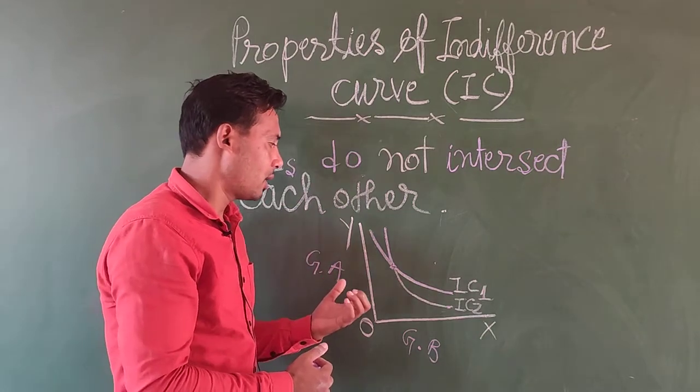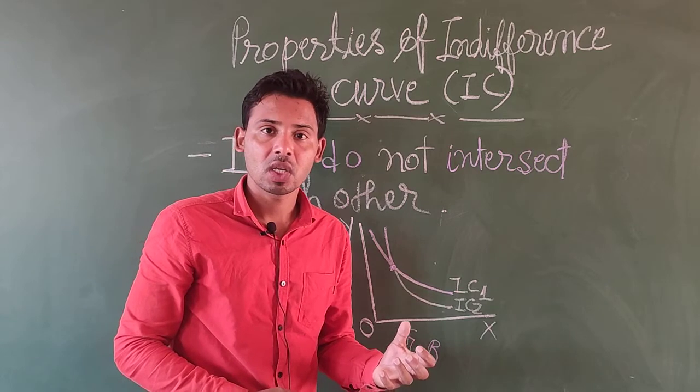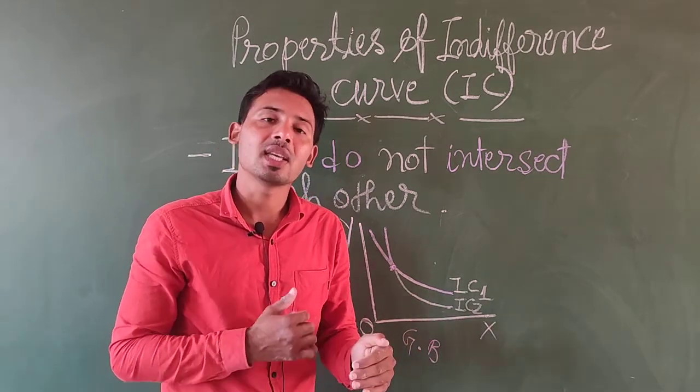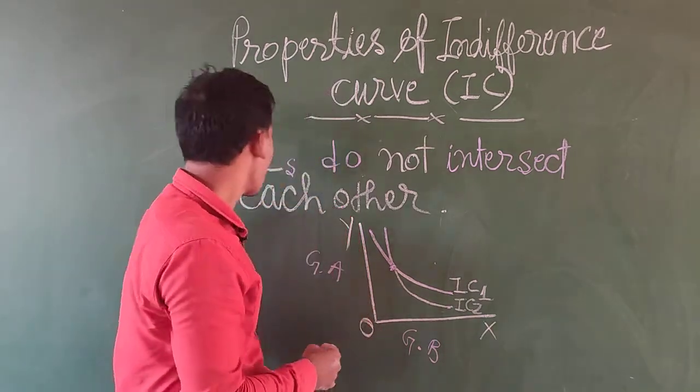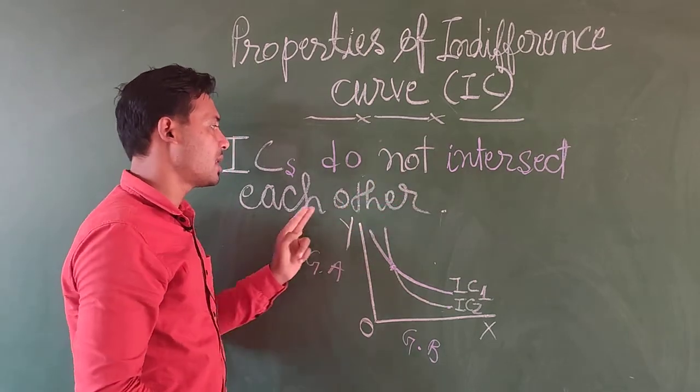We will conclude this that if the ICs cross each other, the satisfaction level is changed. And that is the reason we say ICs do not intersect each other.